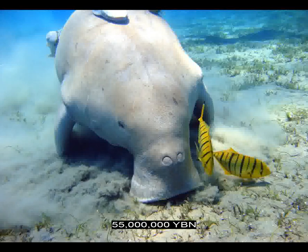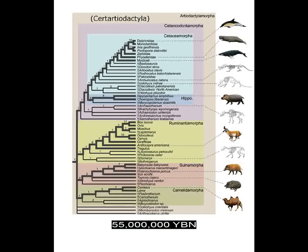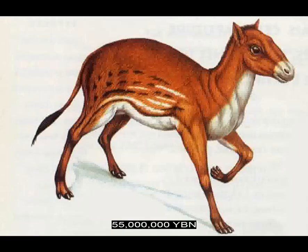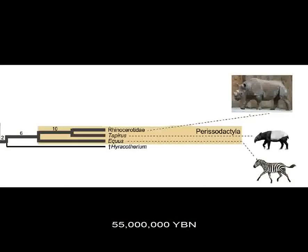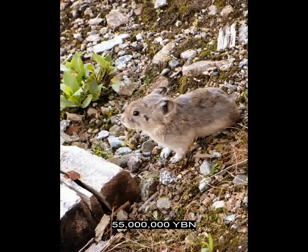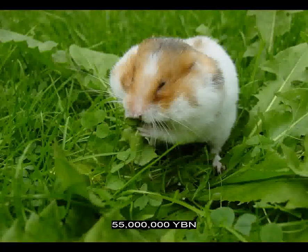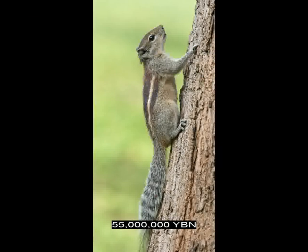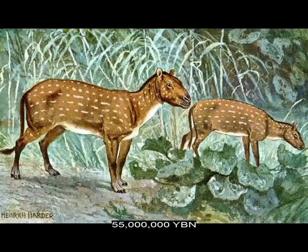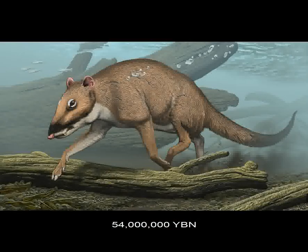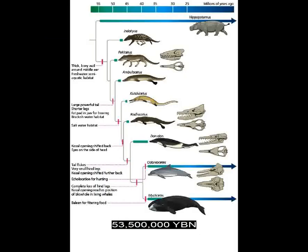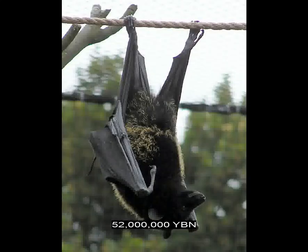The Afrotheres elephants evolve. The Afrotheres manatee and dugong evolve. The Laurasiatheria Cetartiodactyla evolve — the ancestor of all artiodactyla, also called even-toed ungulates: camels, pigs, ruminants including deer, giraffe, cattle, sheep and antelope, hippos, and all Cetacea — whales and dolphins. Hippos are the closest living land relatives of the whales and dolphins. The Laurasiatheria Perissodactyla evolve — odd-toed ungulates — the ancestor of all horses, tapirs, and rhinos. The Eutheria Lagomorpha evolve — ancestor of rabbits, hares, and pikas. The Eutheria Rodentia evolve — rodents. The rodents Myomorpha evolve — ancestor of rats, mice, gerbils, voles, lemmings, and hamsters. The primates tarsiers evolve. The earliest marine mammal and whale, Himalicetus. The Laurasiatheria Chiroptera evolve — ancestor of fruit bats and echolocating bats.